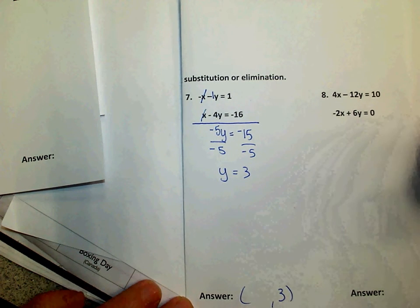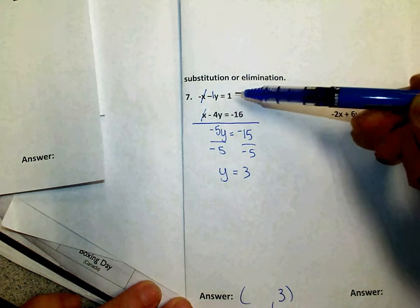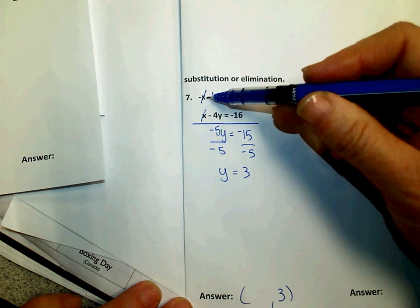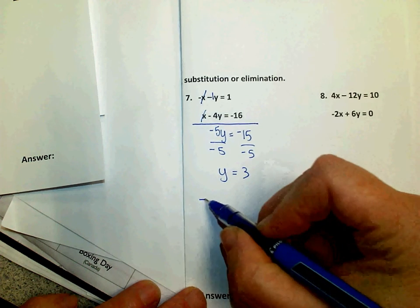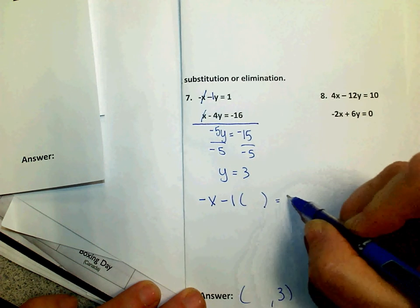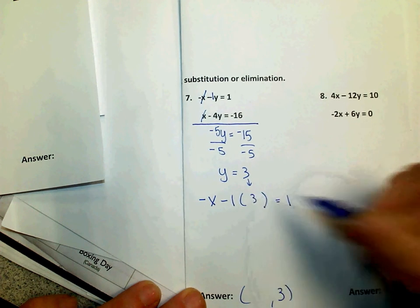Now you have to go back and find the x value. You can use any of these two equations. I'm going to use this top one. So I know that negative x minus 1 times y equals 1. But I'm going to put the 3 where the y was.